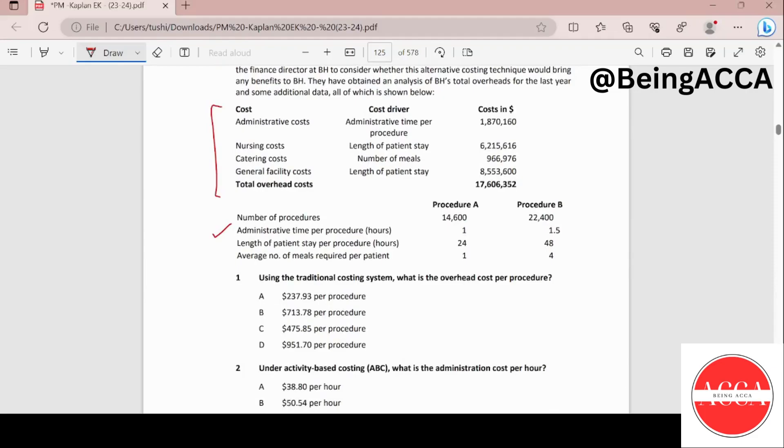This is my total overhead costs 17606352, and I'm going to be dividing this by the total number of procedures which is 14600 plus 22400. Let me perform this calculation quickly on my calculator and this gives me 475.847 which I round off to two decimal places. So I get my answer as option C.